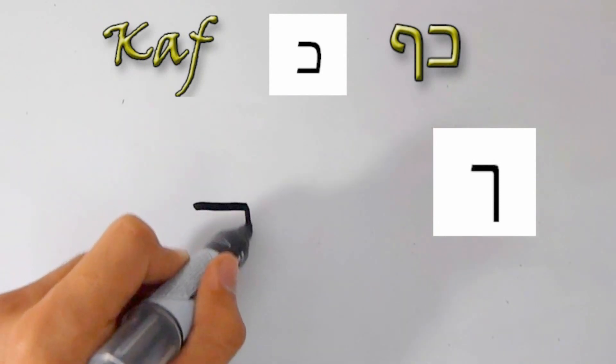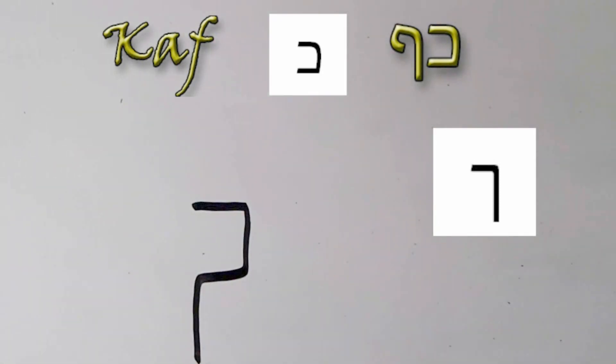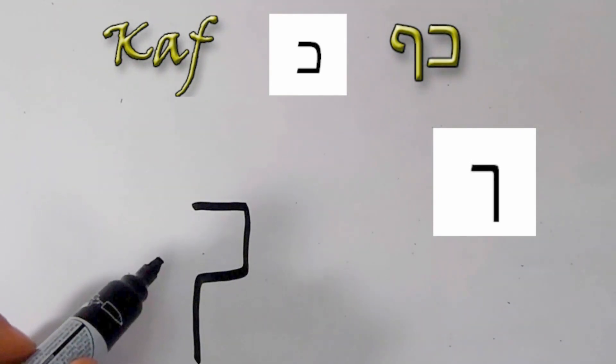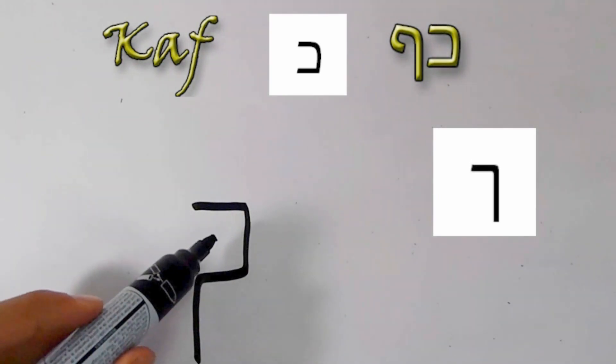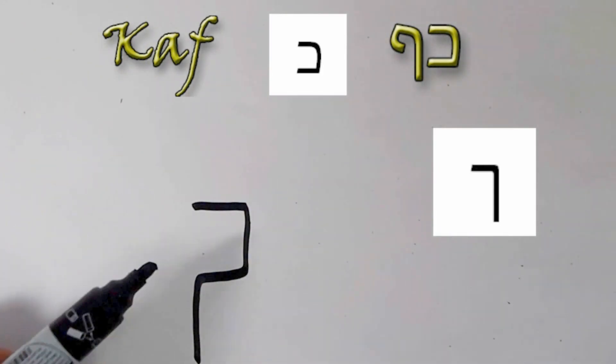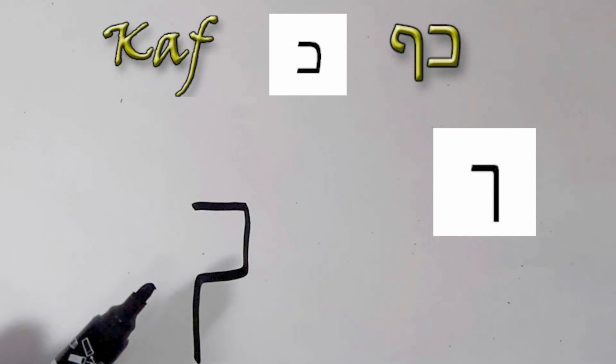In this case, we write it down like so. This is Chaf at the end of a word. It's important to say that you cannot put a dot in this form of the Chaf at the end of a word. It will always be Chaf.